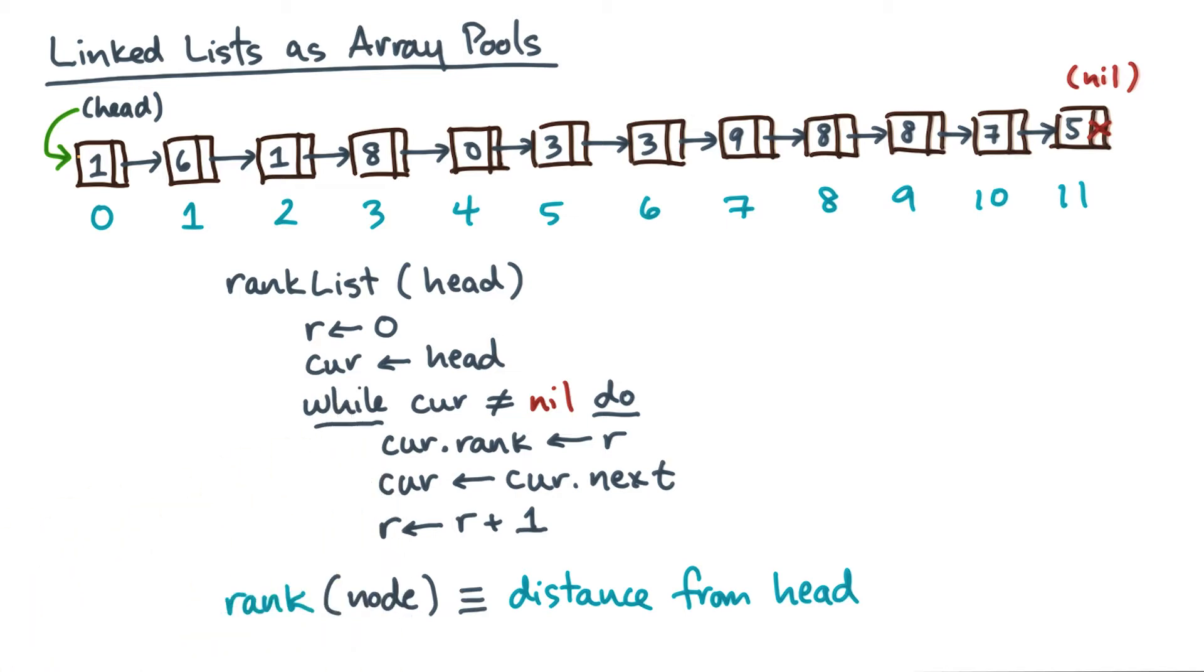Now, put another way, I could ask you the question: what made scans on arrays easier? Essentially, it was random access. So what you need to do is you need to take this list representation and turn it on its head, so to speak.